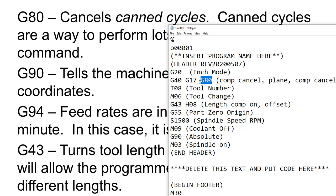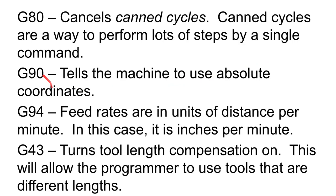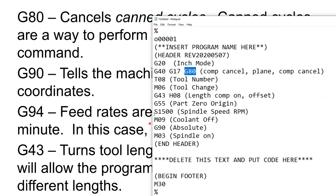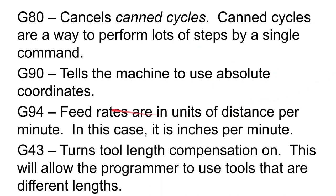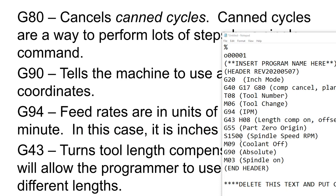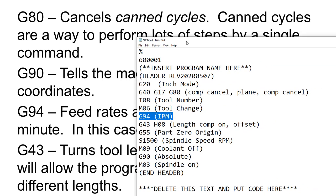G80 is in here to clear any canned cycles. G90 — we've talked about this, and I have a dedicated slide for it because it's fundamental to understand the difference between absolute and incremental coordinates. G94 puts our feed rate in units of distance per minute — in our case, inches per minute.